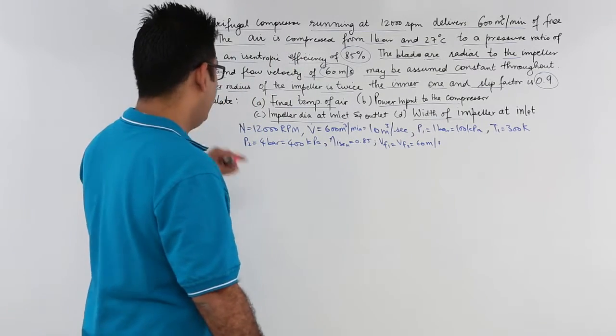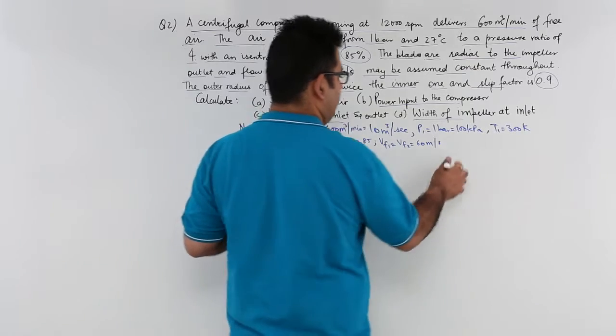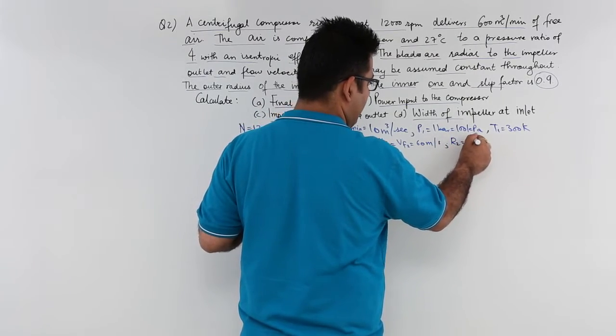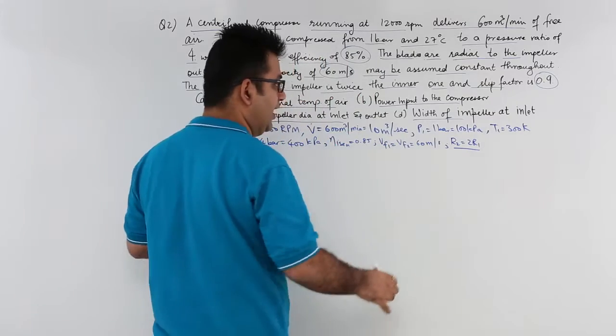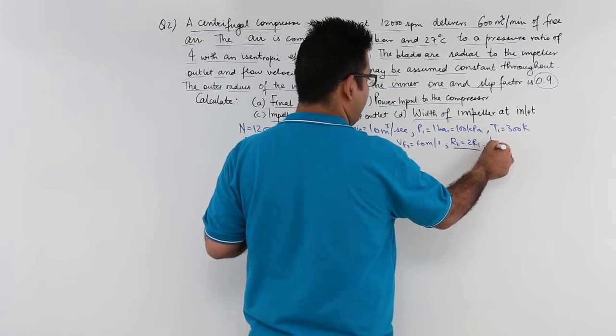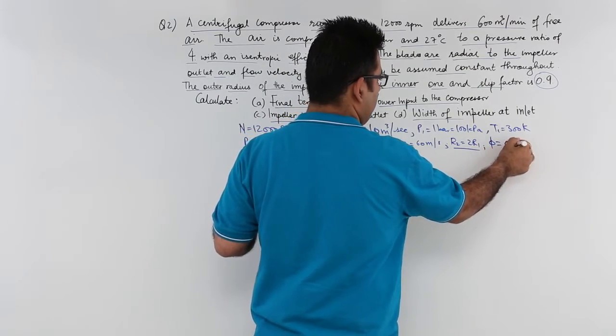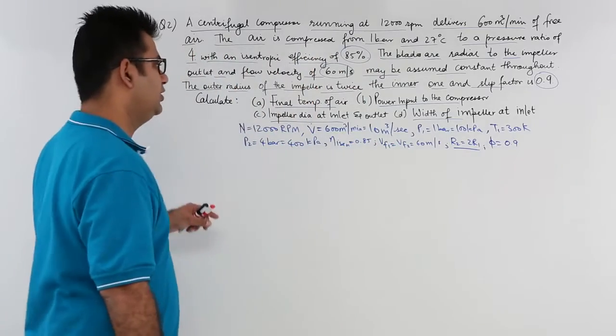And the outer radius is twice the inner radius. So R2 is equal to 2R1. This is given to you and we also have the slip factor phi which is 0.9. So this is given to us.